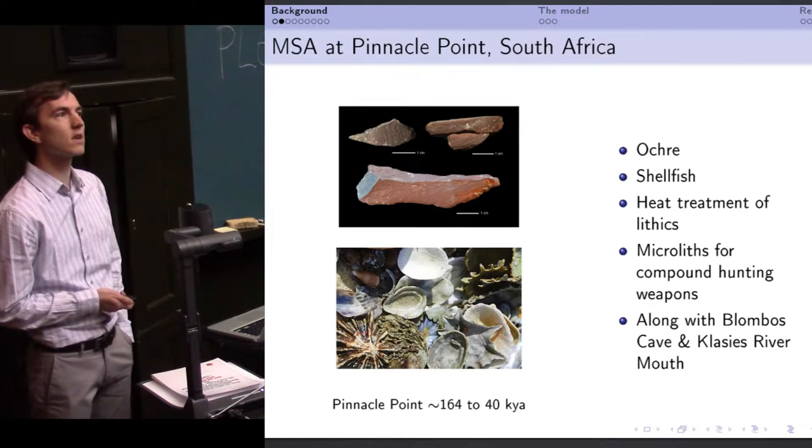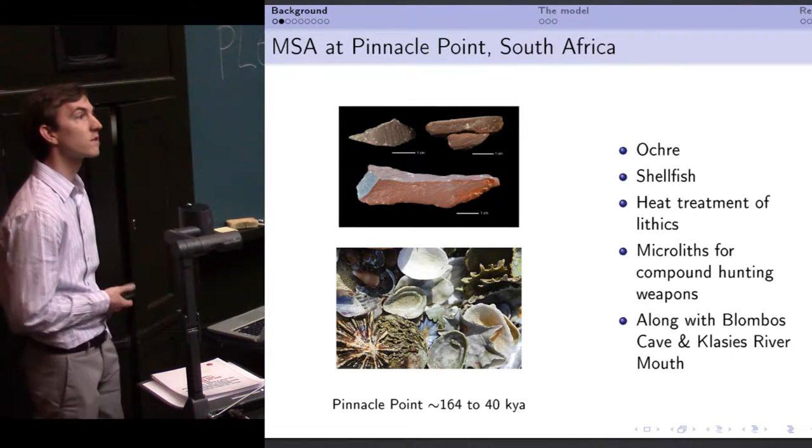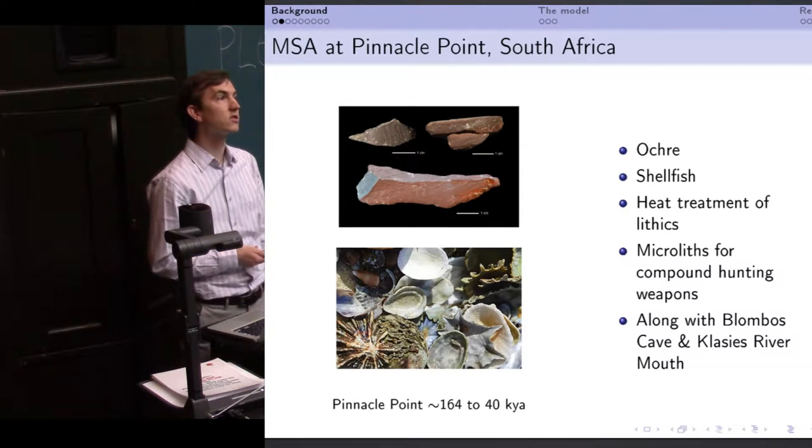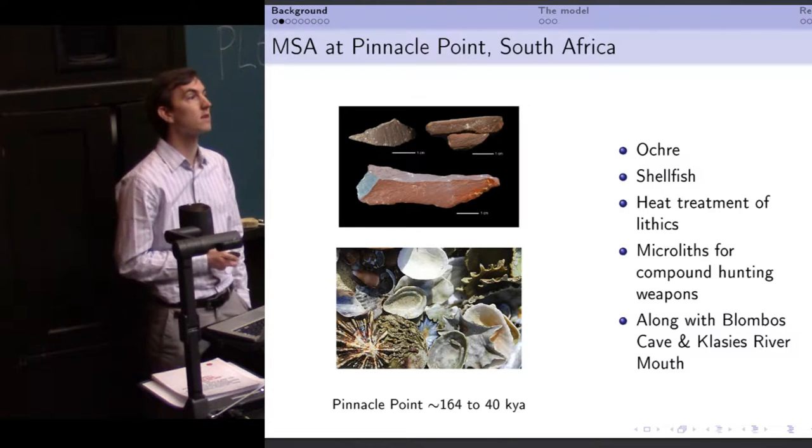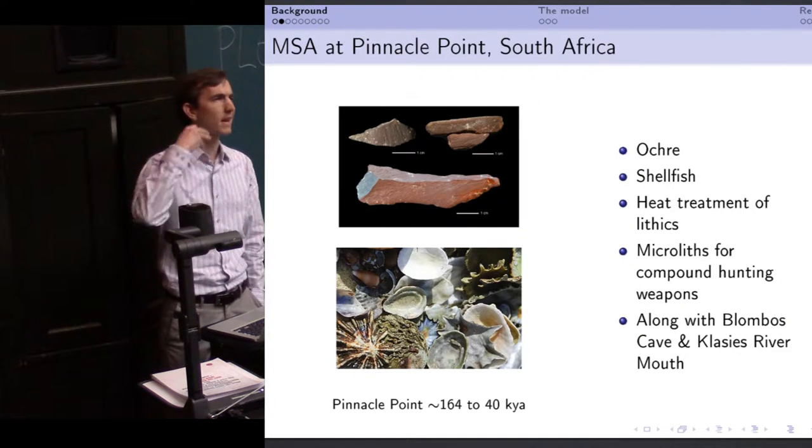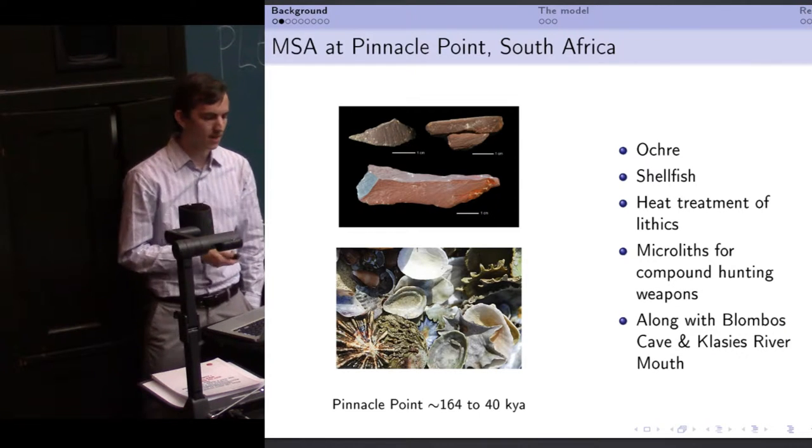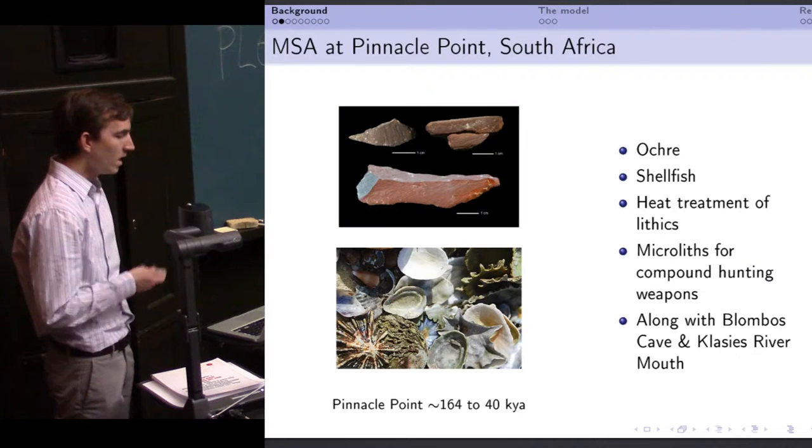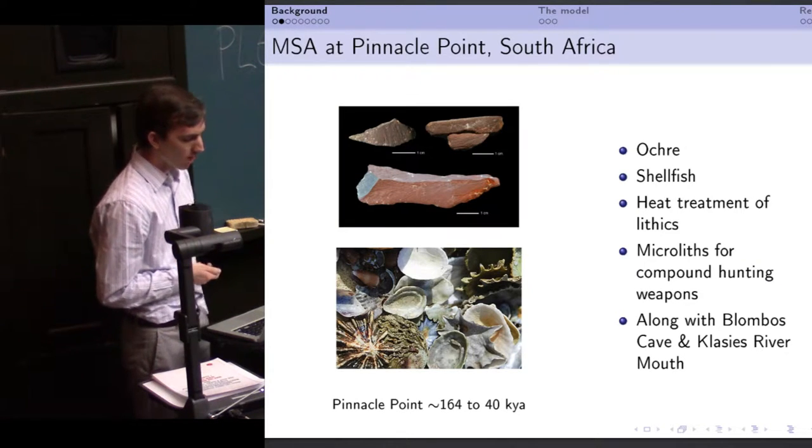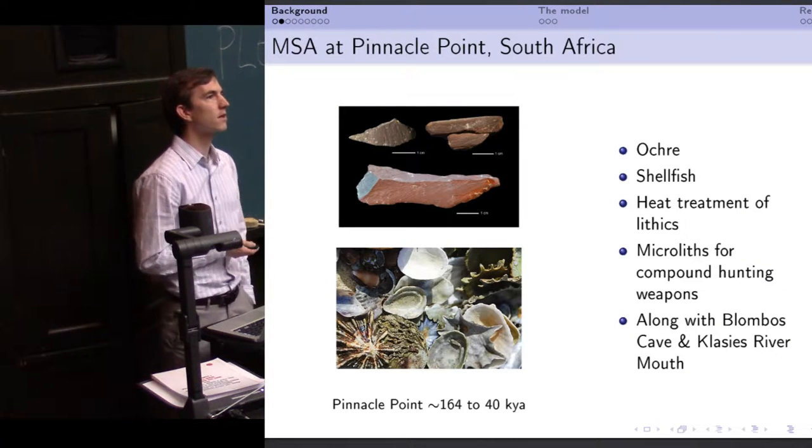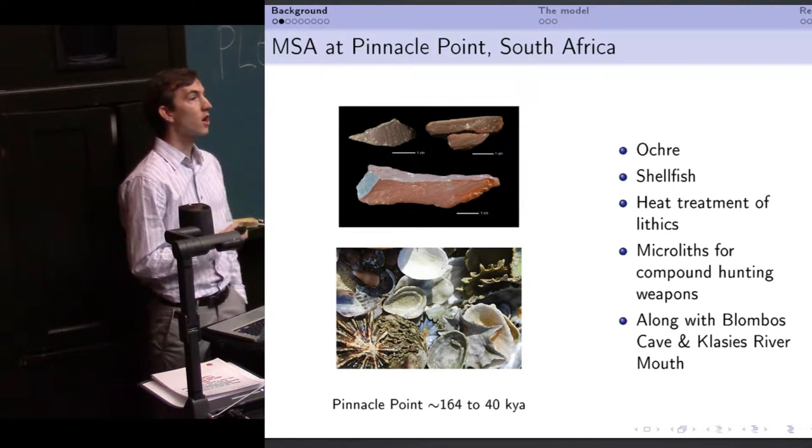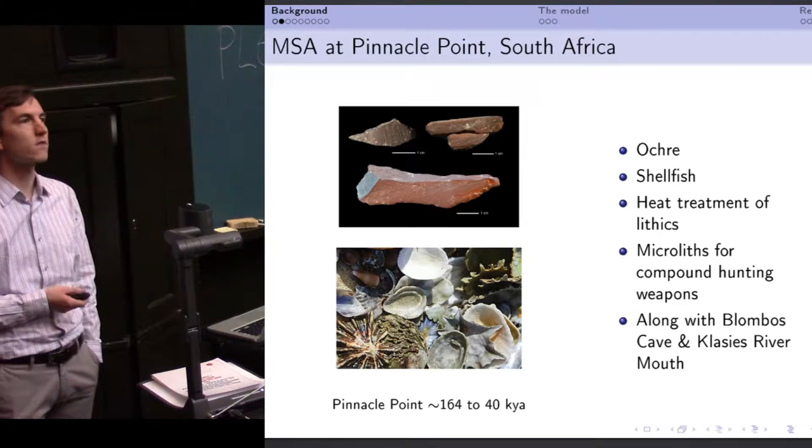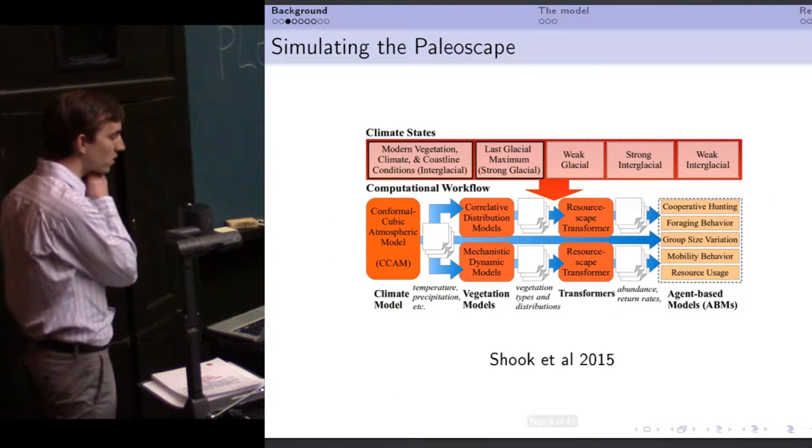It is the site of the earliest use of ochre in the archaeological record, presumably for some sort of symbolic expression type of purpose. Also the earliest use of shellfish as kind of key resource in the human diet. Shellfish of course, you've got to kind of plan for that. You have to understand the tidal cycle and things like that to exploit it properly. Heat treatment of lithics, microliths for making compound hunting weapons. All of these are kind of key markers in the emergence of modern cognition. Blombos Cave and Klasies River Mouth, you may have heard of those sites as well. They're all in the same little strip of South African coastline.